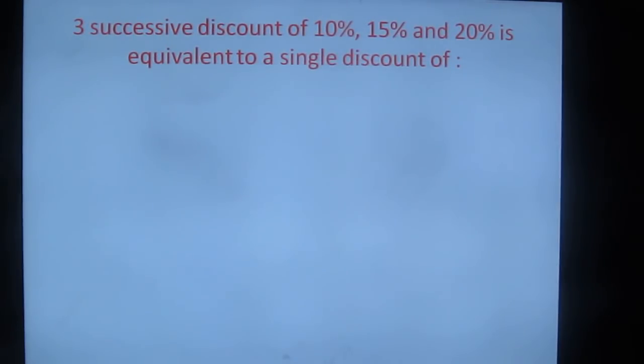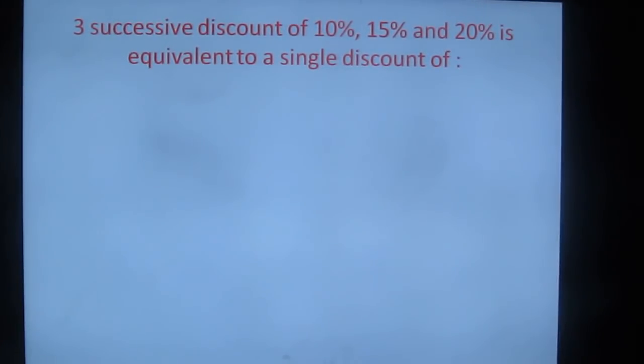Next question: 3 successive discounts of 10%, 15%, and 20% is equal to single discount. How to do this? Take the base number as 100%. What is 100% minus 10%? 90%. What is 100% minus 15%? 85%. What is 100% minus 20%? 80%. So 100 minus 15 is 85, 100 minus 10 is 90, 100 minus 20 is 80.